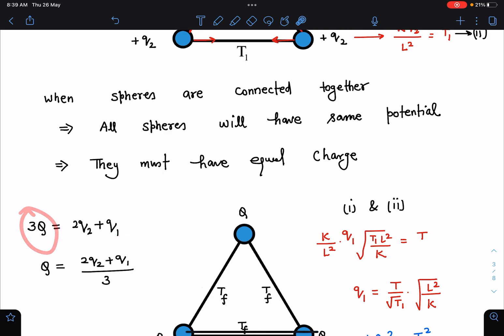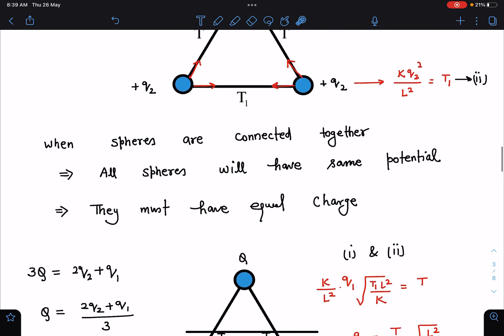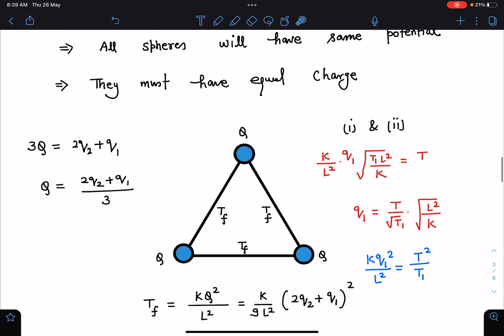Finally charge is 3Q, let us assume capital Q is the charge on each sphere. Now I can say here this 3Q must be equal to 2Q2 plus Q1. From here I know the value of this capital Q and by solving these two equations we will come to this part later on.